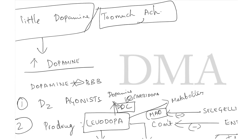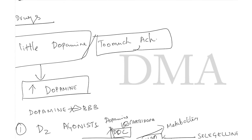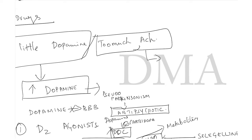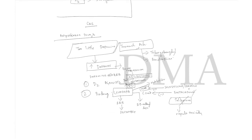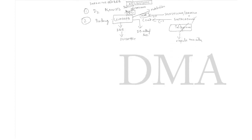Pseudo-parkinsonism is associated with antipsychotics like haloperidol. To decrease excess acetylcholine in Parkinson's, give trihexyphenidyl or benztropine — mnemonic: 'Park my Benz' — benztropine is for Parkinson's.